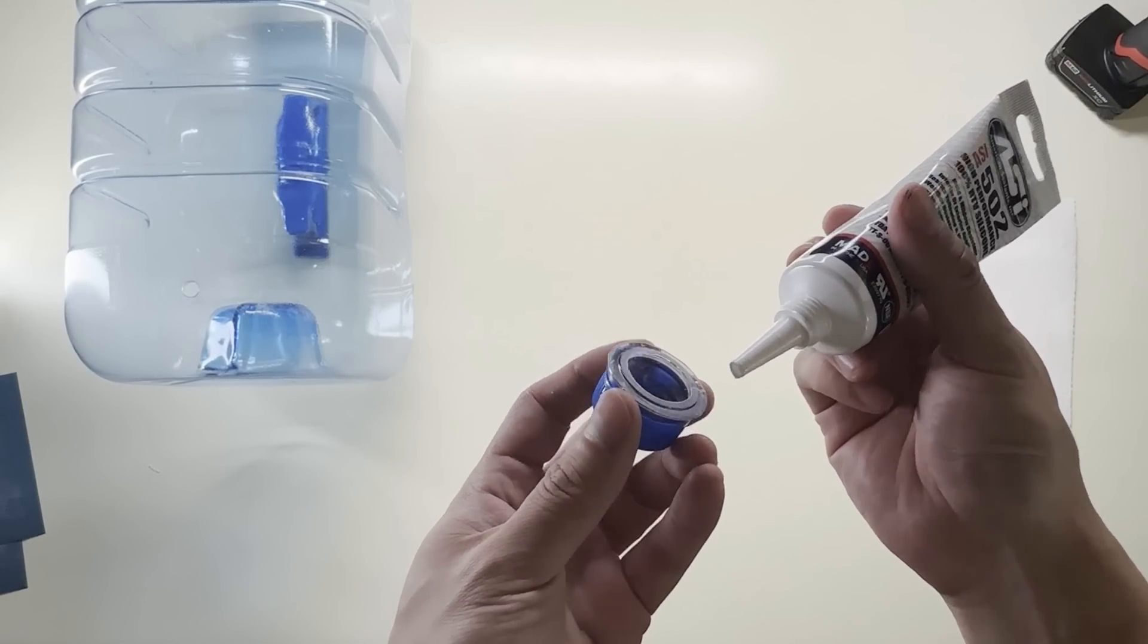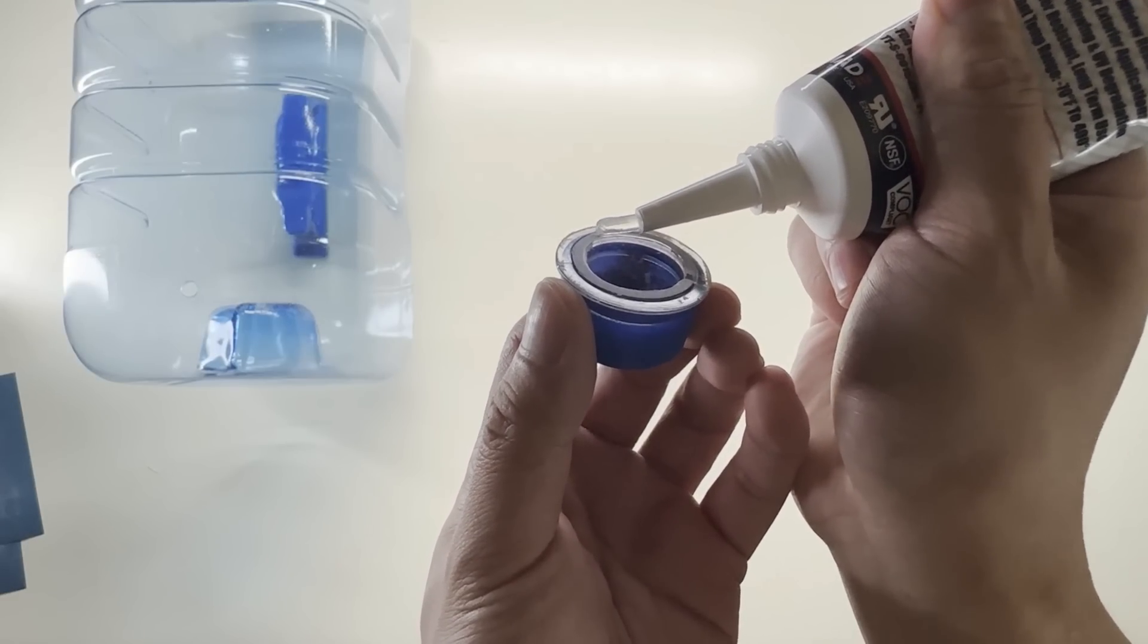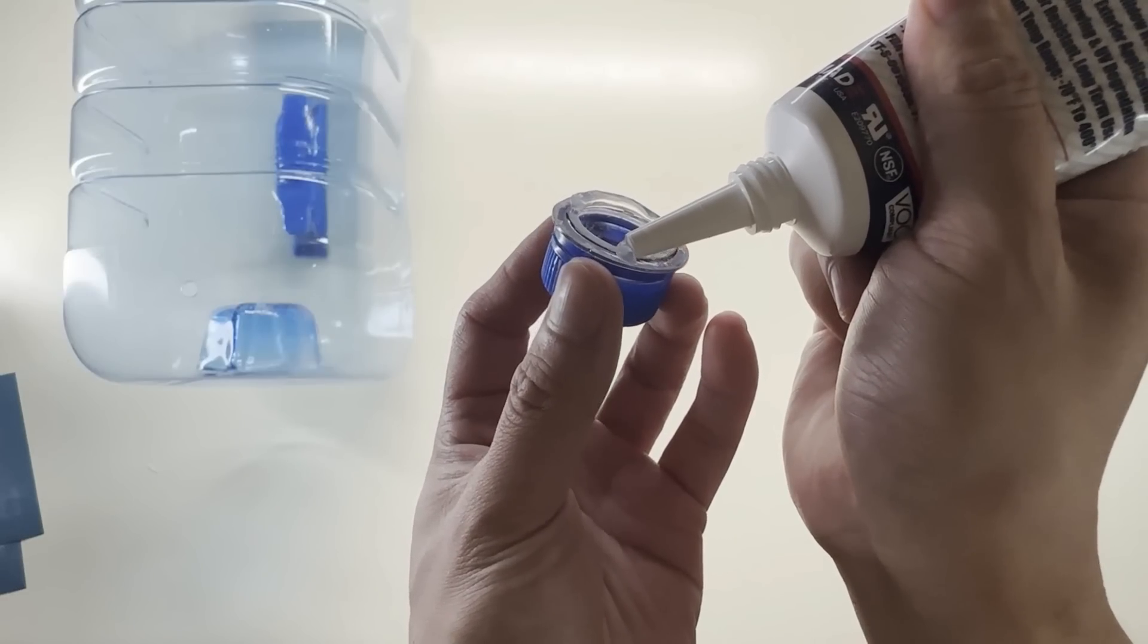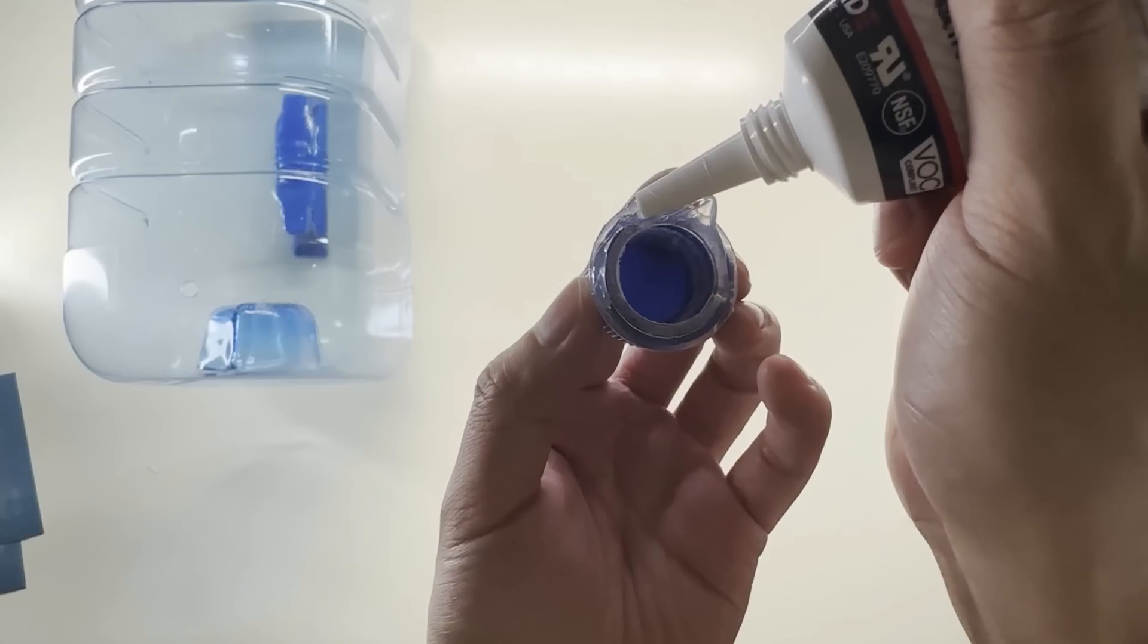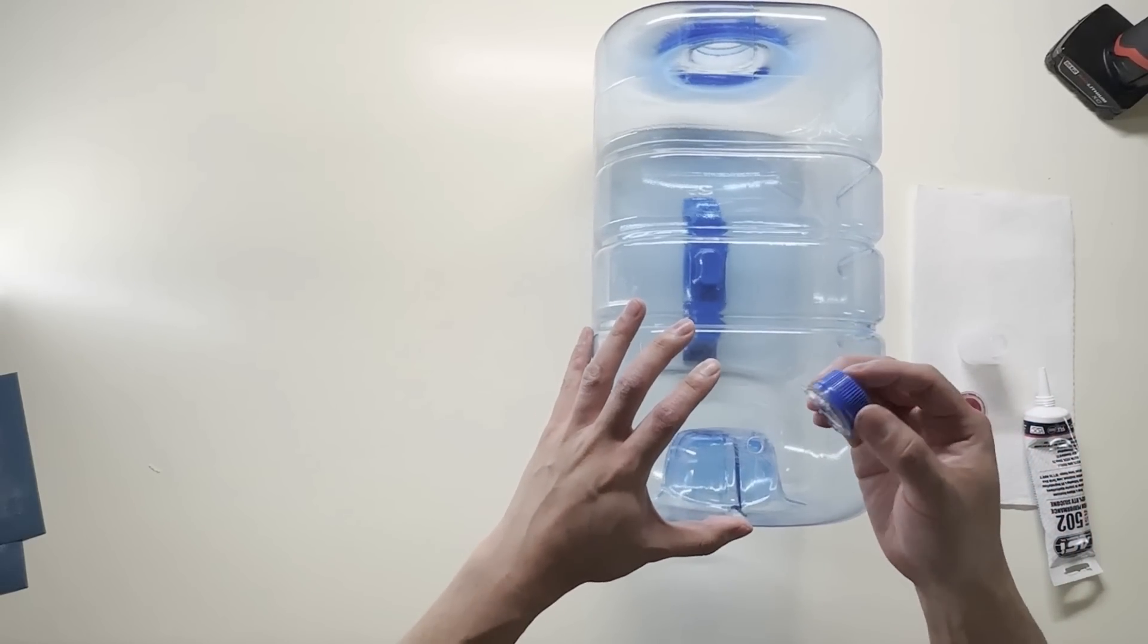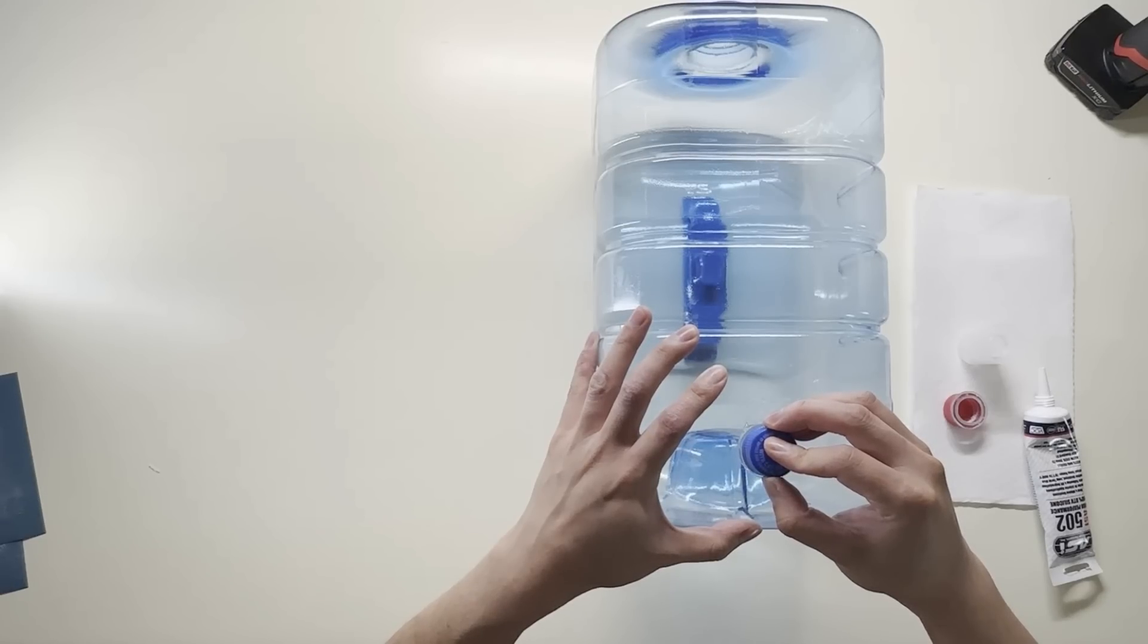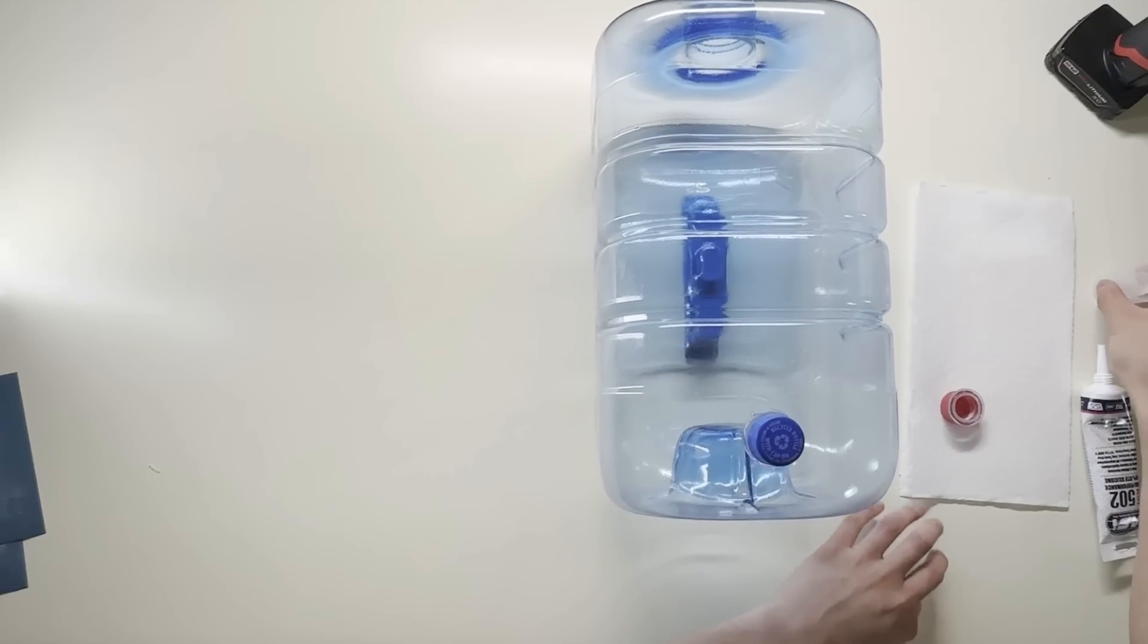Apply a small amount of your food-safe silicone all around the lip of the cap. Next, seal it right on top of the hole that you just drilled. Apply some pressure and let it set.